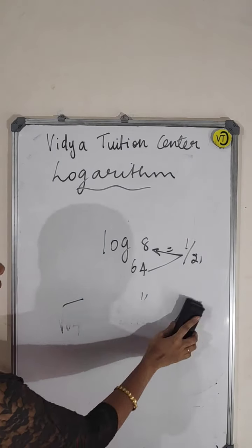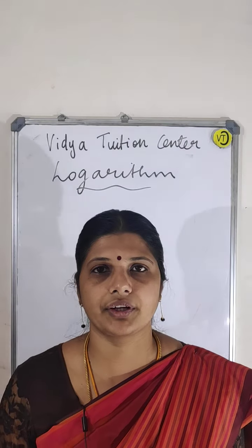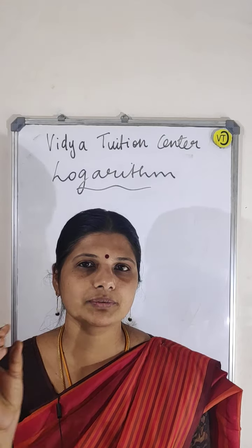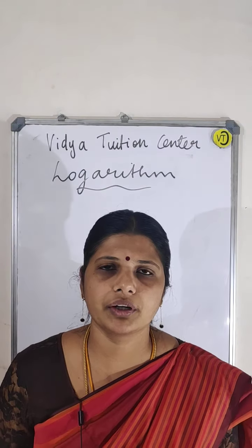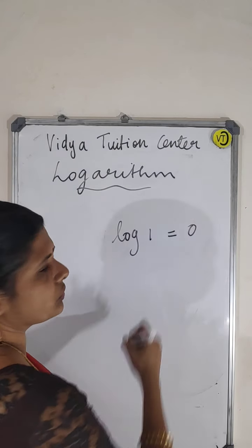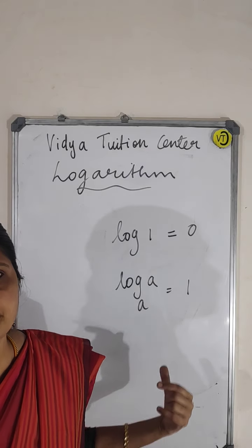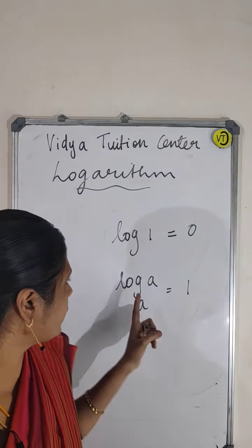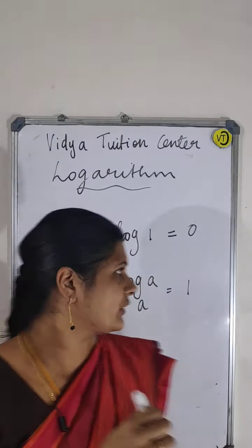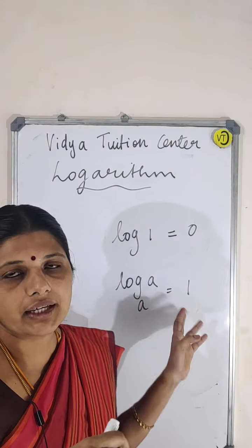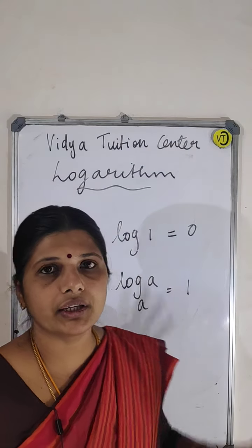Now I am going to give some small sums to do here. Before that, only one simple formula you have to know. Log 1 is equal to 0, and log a base a is equal to 1. Log 10 base 10 is equal to 1, log 100 base 100 is equal to 1 — whatever the same number you have in the base, that equals 1. And always log 1 is 0, don't care about the base — log 1 is always 0.